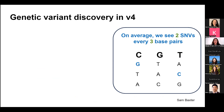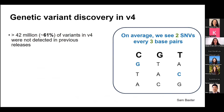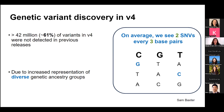The scale and diversity in V4 allows us to now see, on average, about two single nucleotide variants for every three base pairs. This equated to greater than 42 million variants in V4 that had not been detected in previous versions. This increased discovery is mostly due to the increased representation of diverse genetic ancestry groups — with more diversity, we're able to see more variation overall.